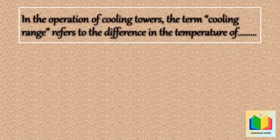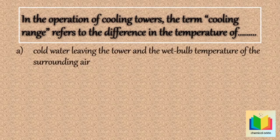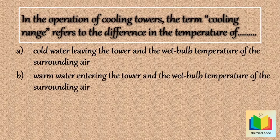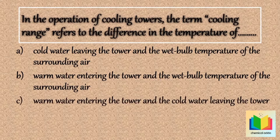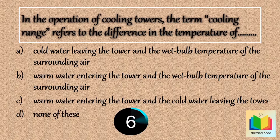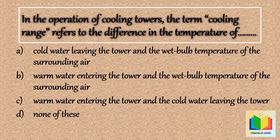Next question: in the operation of cooling towers, the term 'cooling range' refers to the difference in the temperature of — option A: cold water leaving the tower and the wet bulb temperature of the surrounding air, option B: warm water entering the tower and the wet bulb temperature of the surrounding air, option C: warm water entering the tower and the cold water leaving the tower, option D: none of these. The answer is option C: warm water entering the tower and the cold water leaving the tower.